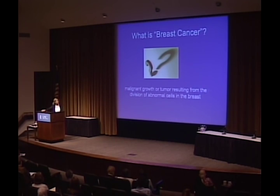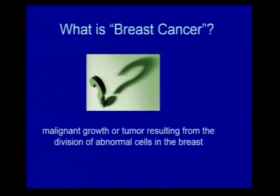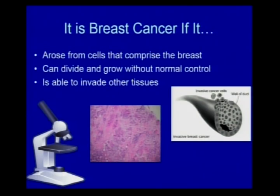So the first, obvious question: what is breast cancer? Before we talk about biology, let's talk about definitions. A malignant growth or tumor results from the division of abnormal cells in the breast — but really from the breast, because a tumor that goes from the breast into the liver is still breast cancer. It's breast cancer if it came from cells that comprise the breast, if it divides and grows without normal controls, and if it's able to invade other tissues.